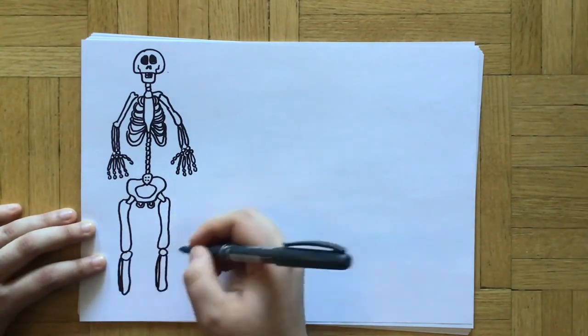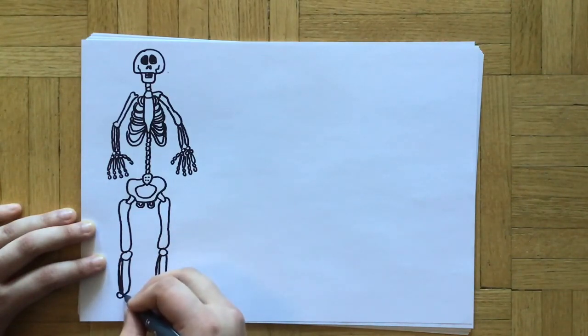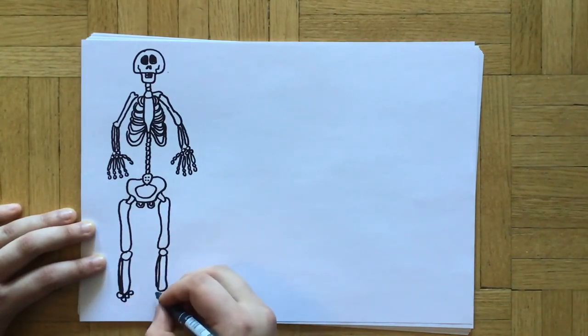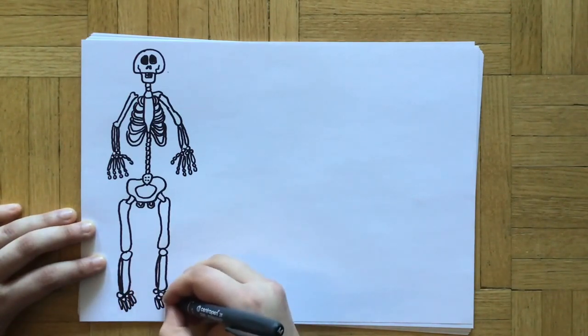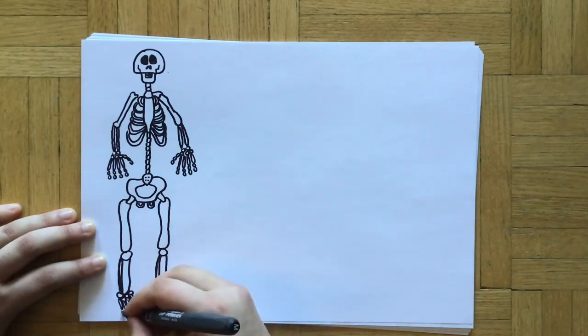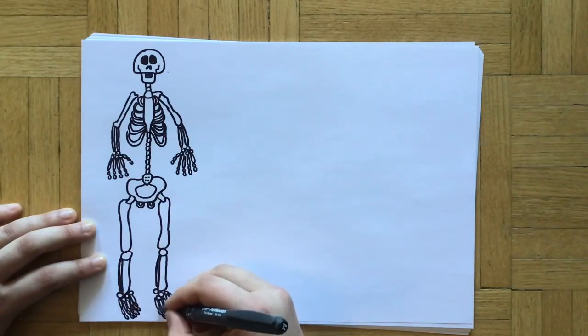And then we have the tibia which is on the front side of your leg, and fibula on the back side of your leg. Similarly to your hands and fingers, our feet are also made of tiny little bones. And if you have a little look at your feet and feel them, you can feel the individual little bones there. How interesting is that!